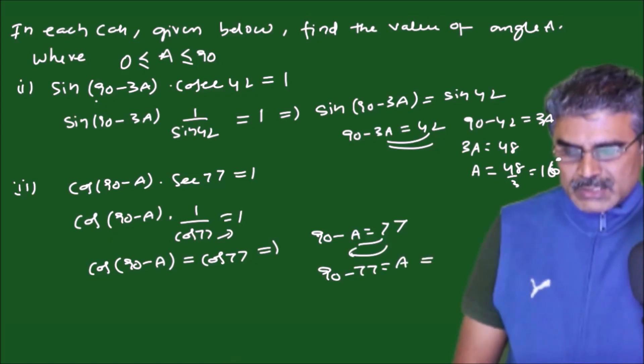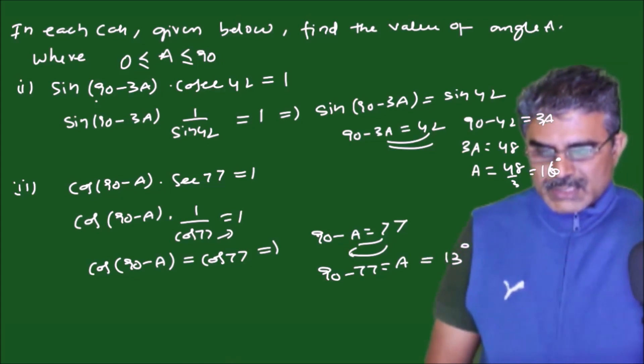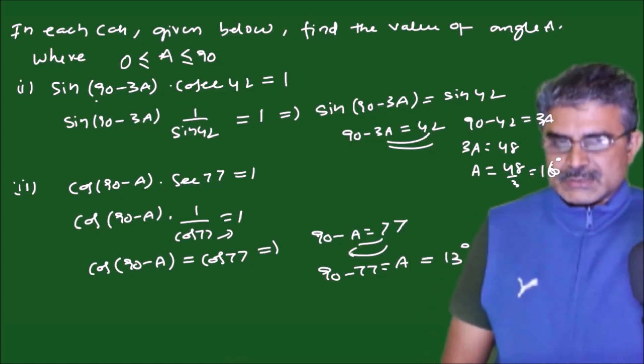Which is equal to 90 minus 77 is 13 degrees. So angle A value is 13 degrees in the second case.